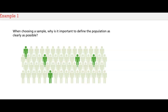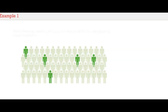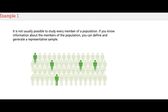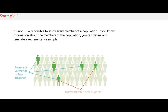When you're choosing a sample, why is it important to define the population as clearly as possible? It is not usually possible to study every member of a population, but if you know information about the members of the population, you can define and generate a representative sample.